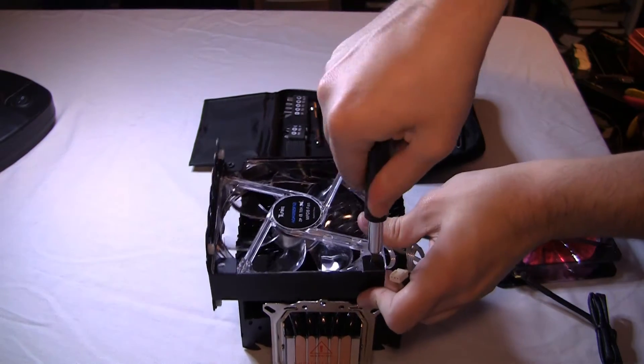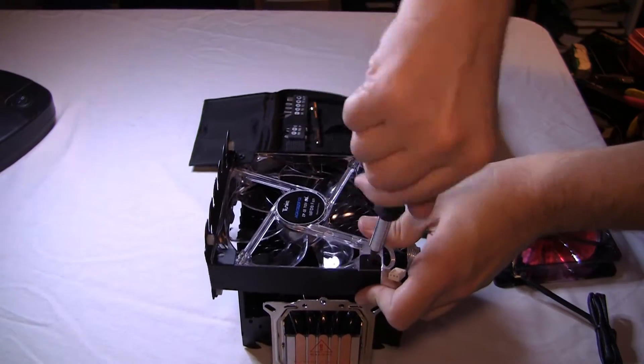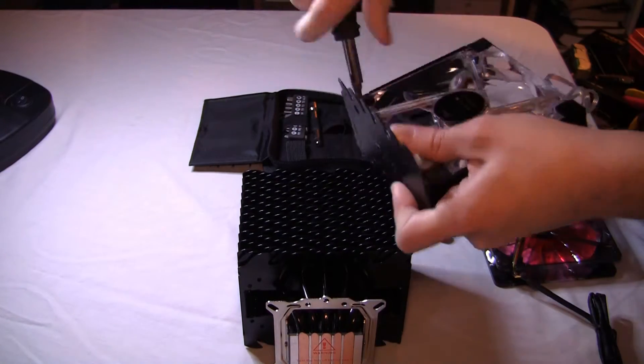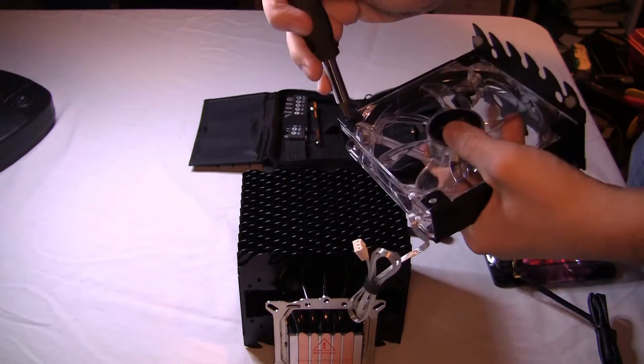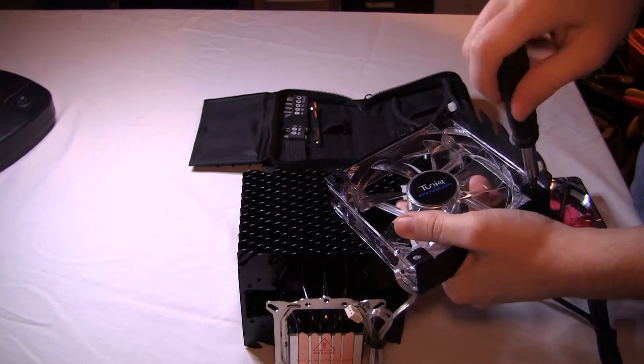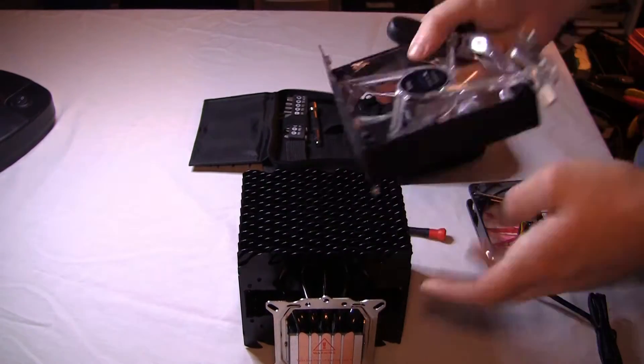So now we're going to take the fan itself out, and this takes me a little bit of time because it is brand new, so they're tight, and I just alternate corners. Nothing new here. We're all capable of doing this. Just alternate corners with the screwdriver to apply equal pressure, and then you'll eventually get the fan out.